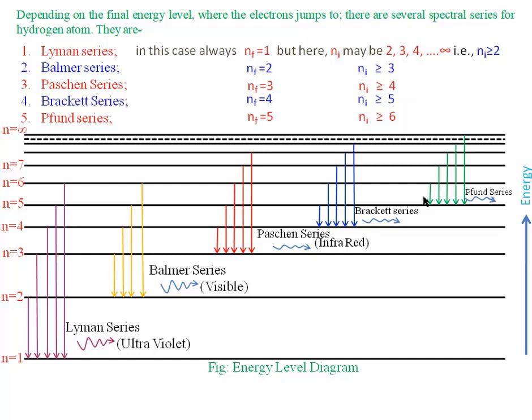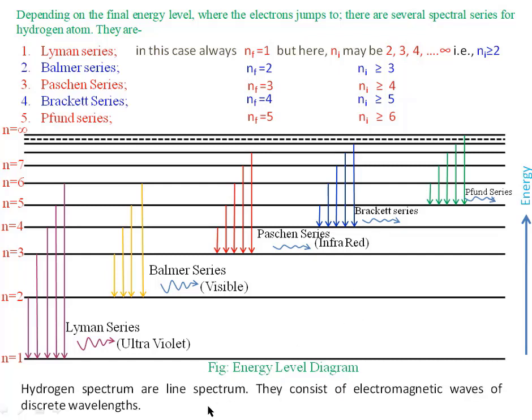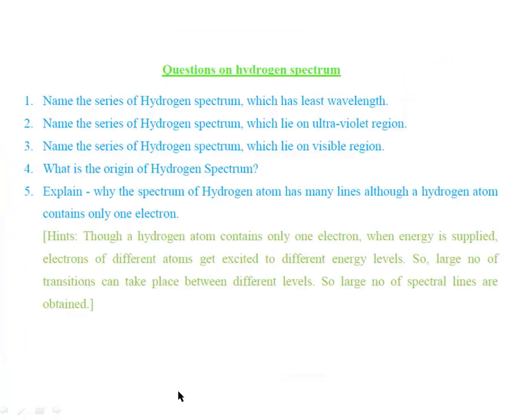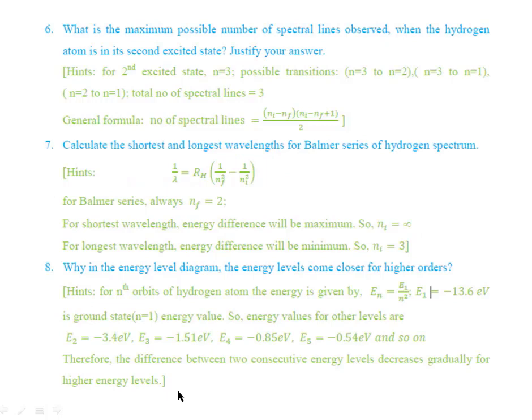For the hydrogen spectrum, these are line spectra consisting of electromagnetic waves of discrete wavelengths. These are some questions on this topic, and answer hints are also given for your convenience. That's all for the day. Thank you.